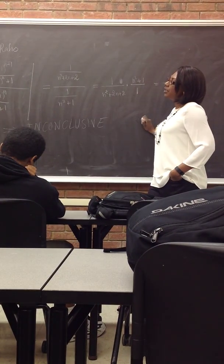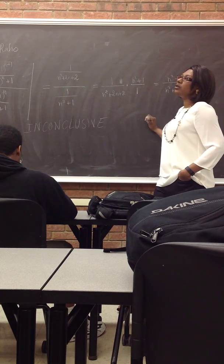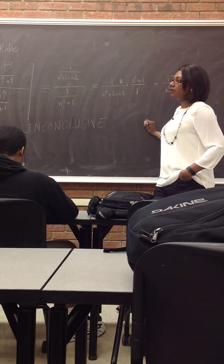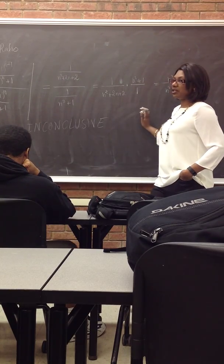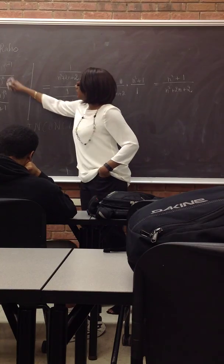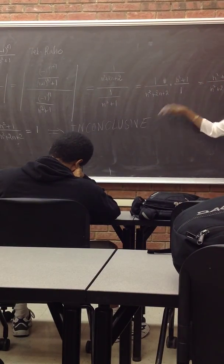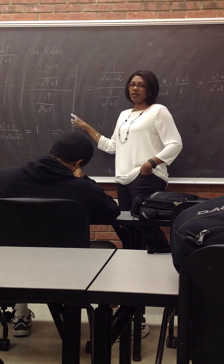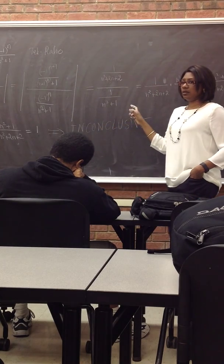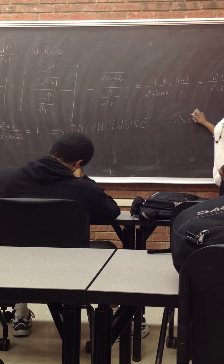Never use the ratio test for a rational series. Because A7 plus 1 and A7 will always have the same degree. Nothing is changing. If I divide this one by that one, you see the power is going to stay the same. So the limit is always going to be 1, no matter what. Okay? So please remember that. I've seen this so many times. Never use the ratio test for a rational series.